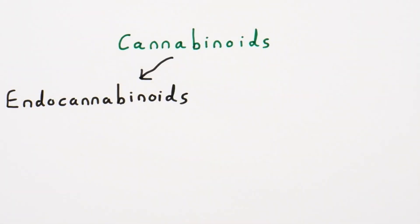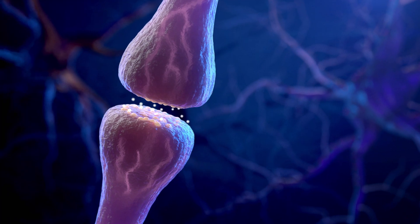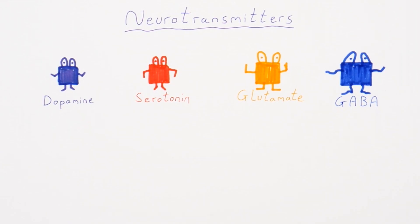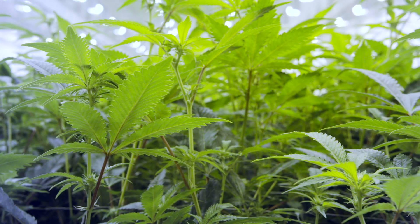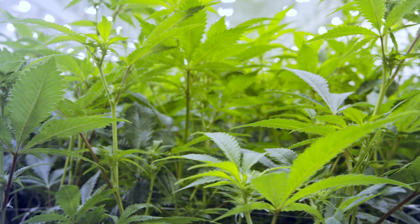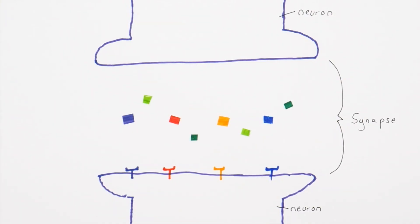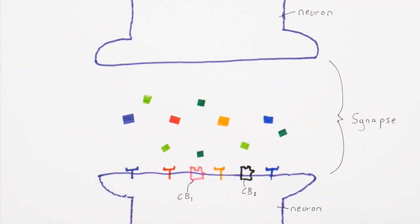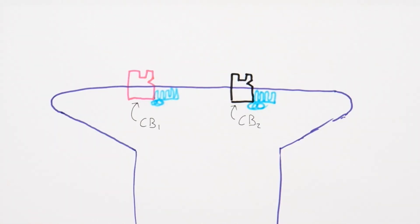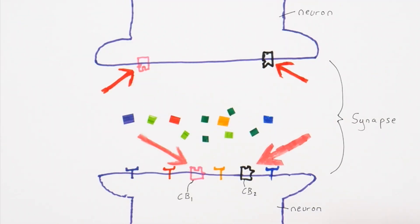Cannabinoids can refer to endocannabinoids that always exist naturally in your body — like a neurotransmitter called anandamide — and phytocannabinoids that are not naturally in your system but come from the cannabis plant. After taking weed, the phytocannabinoids start binding to the CB1 and CB2 receptors. CB1 and CB2 are found in both neurons, so the phytocannabinoids can bind and cause changes to both neurons.